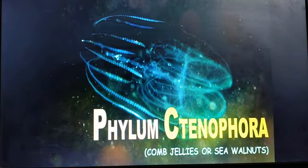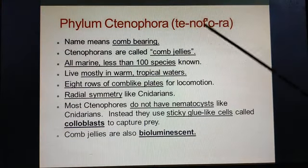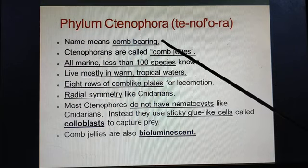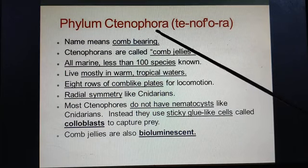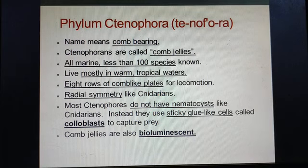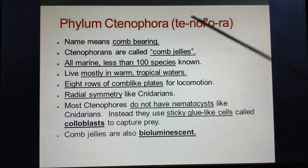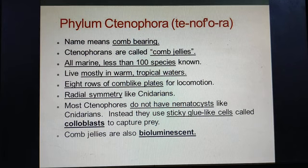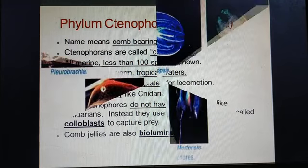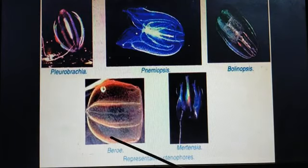Next, we will learn about Phylum Ctenophora. Ctenophora means 'comb bearers.' Ctenophores are called comb jellies. All organisms of Ctenophora are marine, with fewer than 100 species. They mostly live in warm and tropical waters. They have eight rows of comb-like plates for locomotion, which act as a locomotory organ.